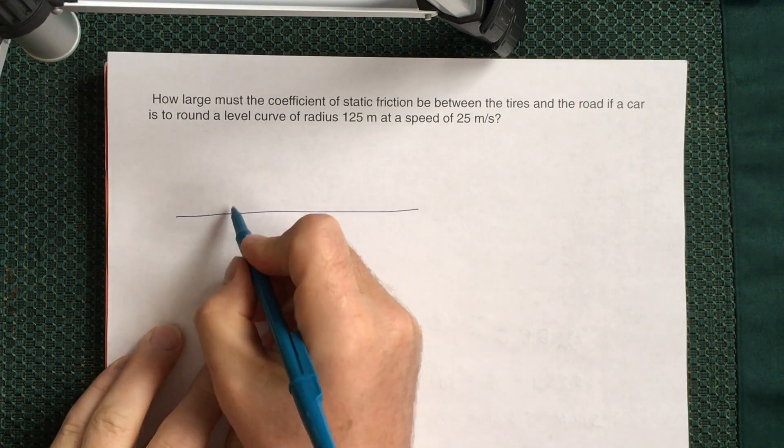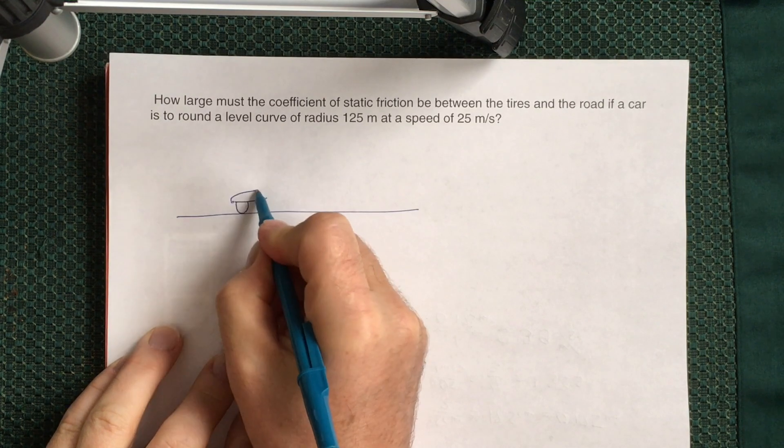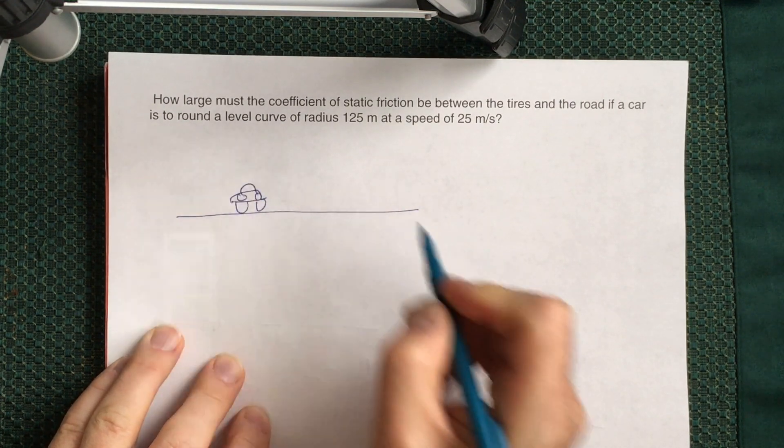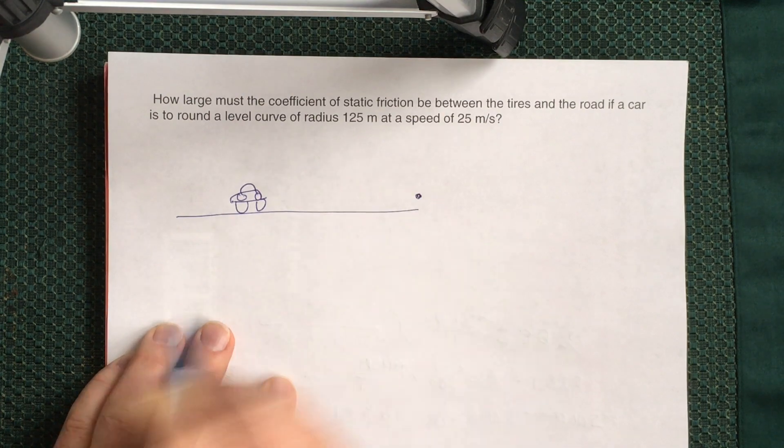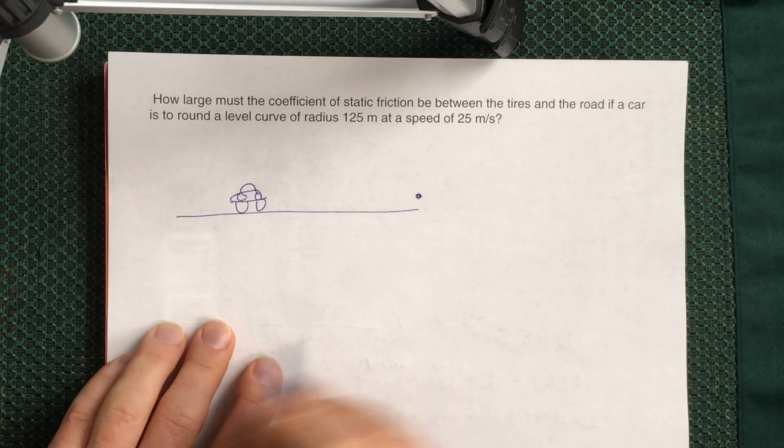So we start from the picture. I have a car. I will show the car from the bottom. I will assume that the car makes a right turn, so the center of the circle over which it moves is from the right.